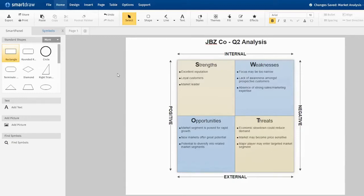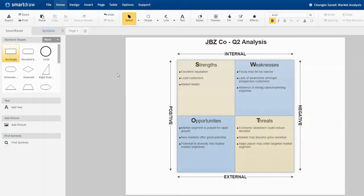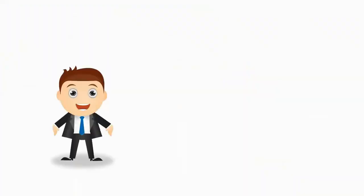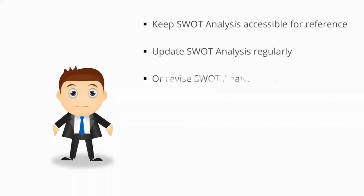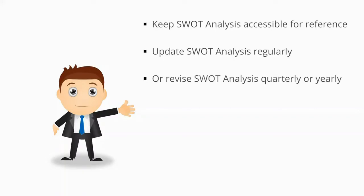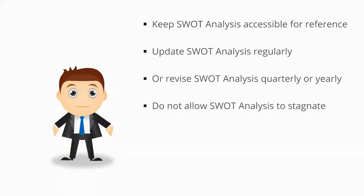That's all there is to it. Now draw your conclusion by analyzing the finished SWOT diagram. Be sure to note if the positive outcomes outweigh the negative. If they do, it may be a good decision to carry out the objective. If they do not, adjustments may need to be made or certain objectives may need to be abandoned. Be sure to keep your SWOT analysis in an easy-to-access place for future reference and discussion. Some managers may want to keep an ongoing SWOT analysis, updating the diagram on a regular basis. Others may prefer to revise the analysis quarterly or yearly — either way, it should not be left stagnant for long.